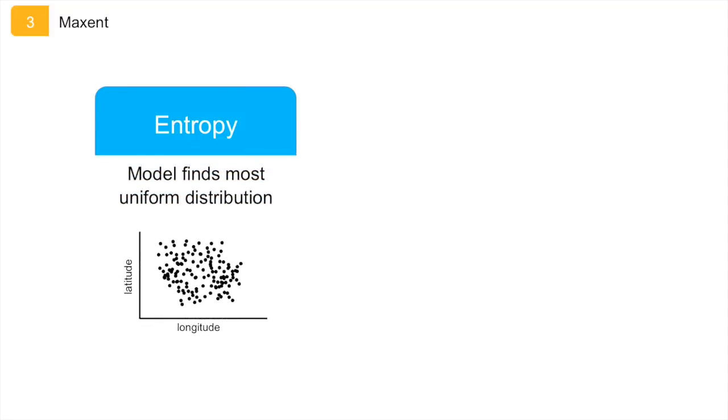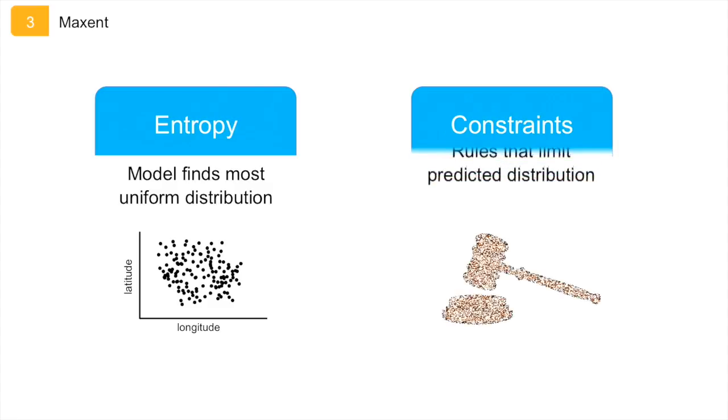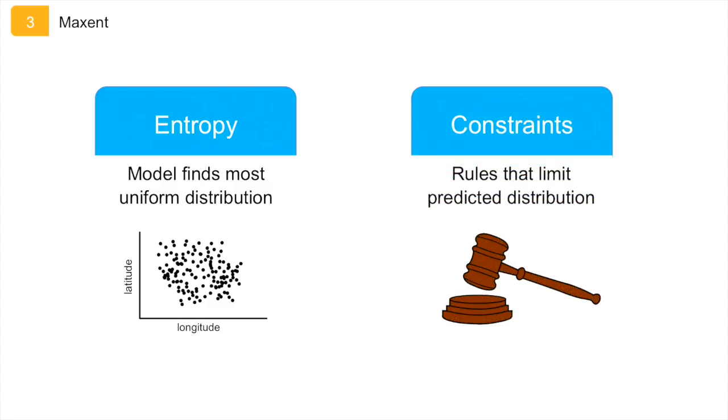Maxent has two main components. The first is entropy. The model is calibrated to find the distribution that is most spread out, or closest to uniform, throughout the study region. And the second one is constraints, which are the rules that constrain the predicted distribution. These rules are based on the values of the environmental variables of the locations where the species has been observed. One of these constraints can be that the mean of each environmental variable at an unknown location must be close to the mean of those variables in known occurrence locations.